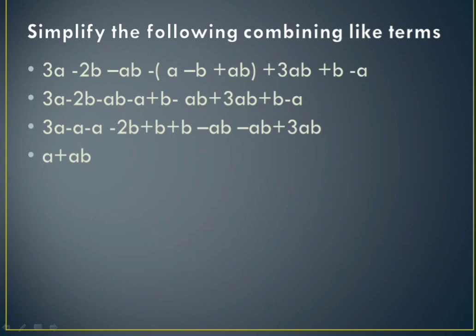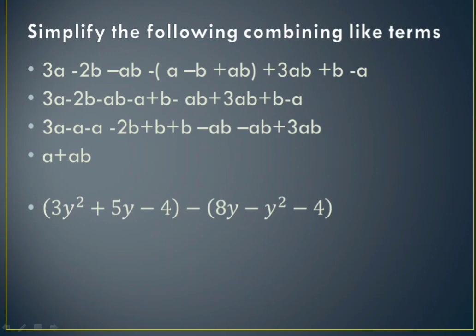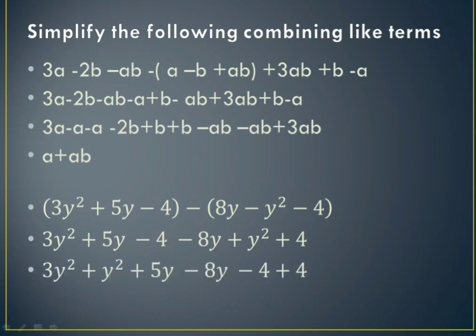Now one more question: 3y squared plus 5y minus 4, minus the quantity 8y minus y squared minus 4. We have a negative sign in front of the bracket, so we change the signs of all terms inside: 8y becomes negative, minus y squared becomes positive, and minus 4 becomes positive. Writing like terms together: 3y squared and plus y squared give 4y squared. Then 5y minus 8y is minus 3y. And minus 4 plus 4 cancels out. So the answer is 4y squared minus 3y.